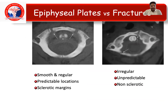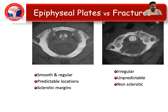How do you differentiate an epiphyseal plate from a fracture? In case of a fracture, it would be irregular, non-sclerotic, and unpredictable. Whereas an epiphyseal plate would be smooth and regular with predictable locations and sclerotic margins.